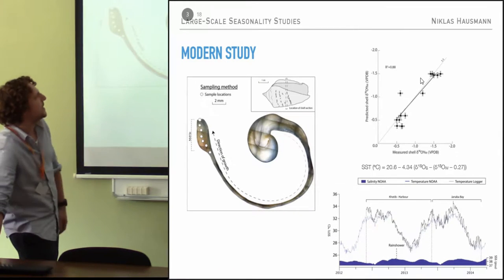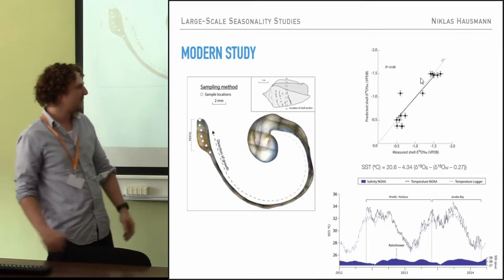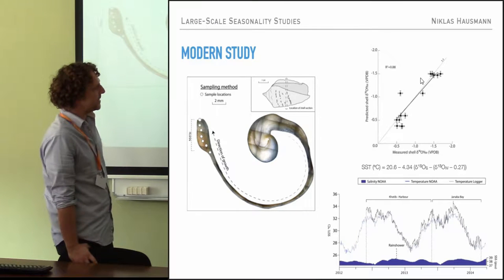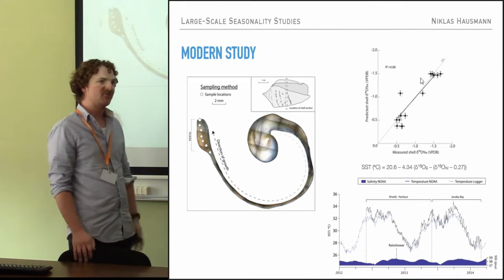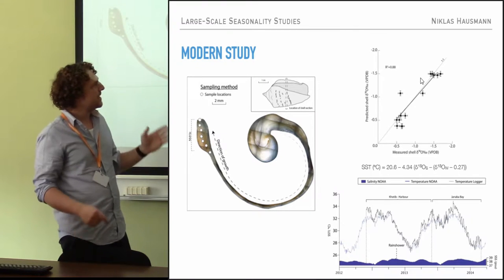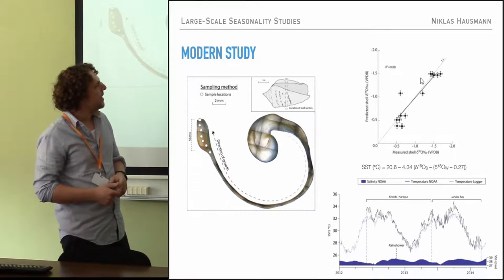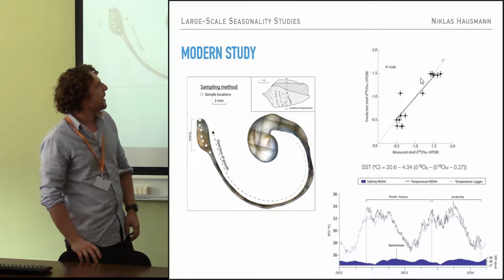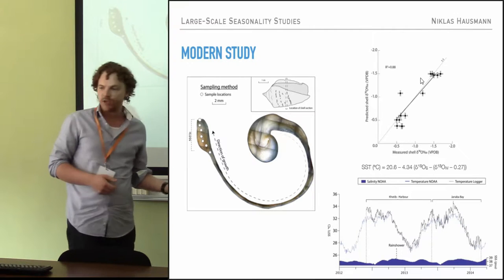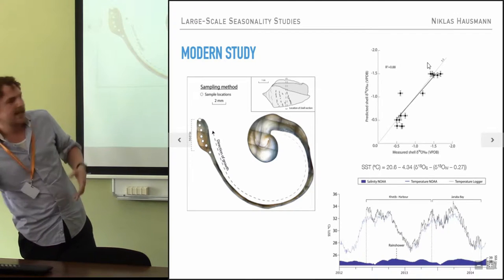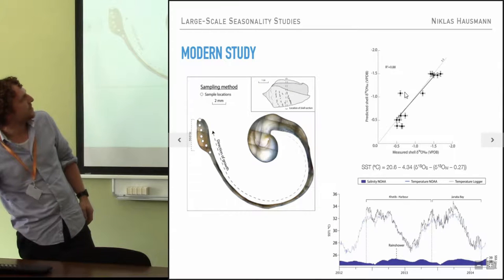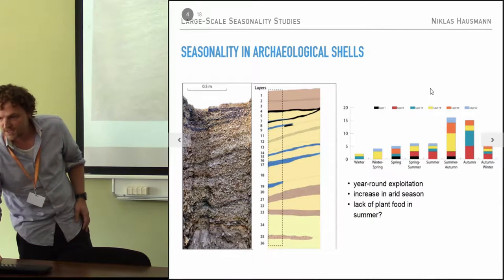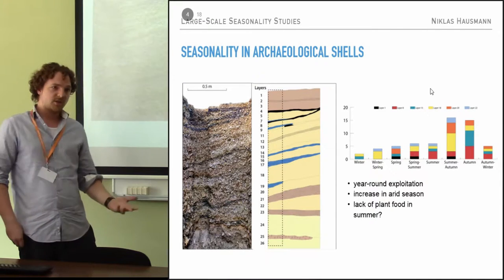This is a more modern study. We look at the local environment and how it is recorded in the oxygen isotopes of the shell. The environment is pretty simple — it doesn't need rain, so the water salinity is basically the same. The temperature change is simple: it goes up in summer, down in winter. We used that to estimate the oxygen isotope ratio, compared it with the actual oxygen isotope ratio, and it largely looks alright. So we used that to apply to the archaeological shells.